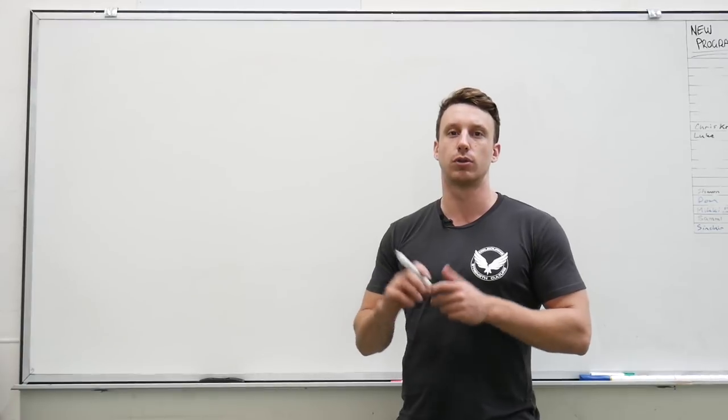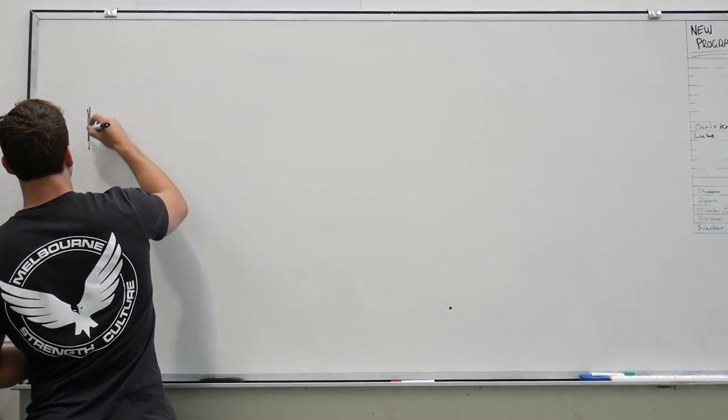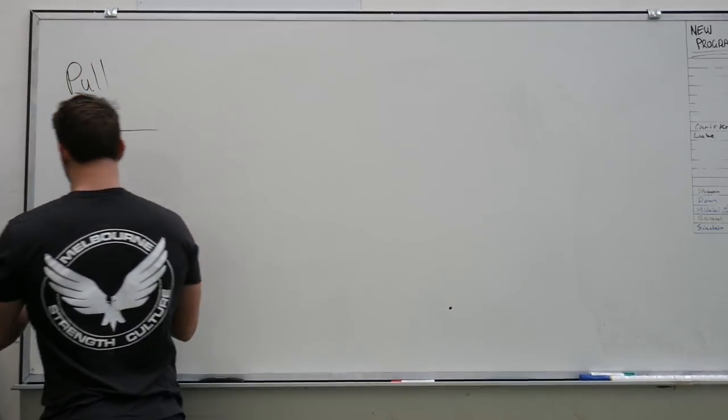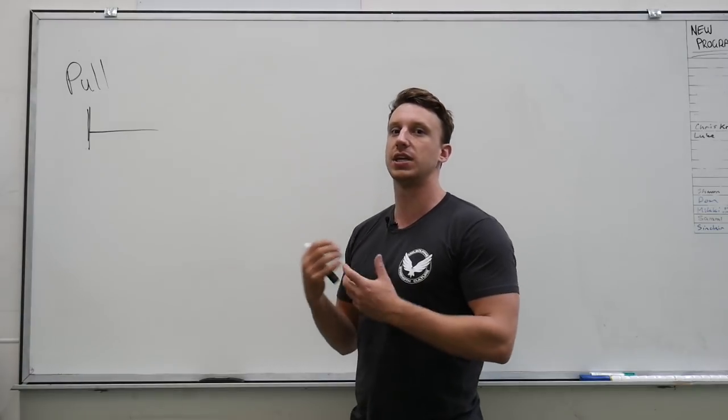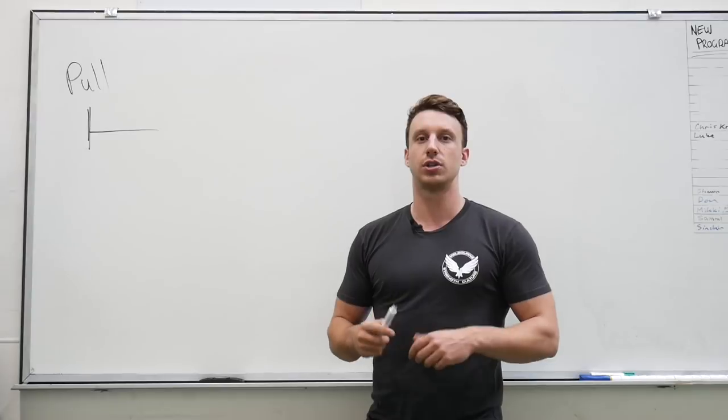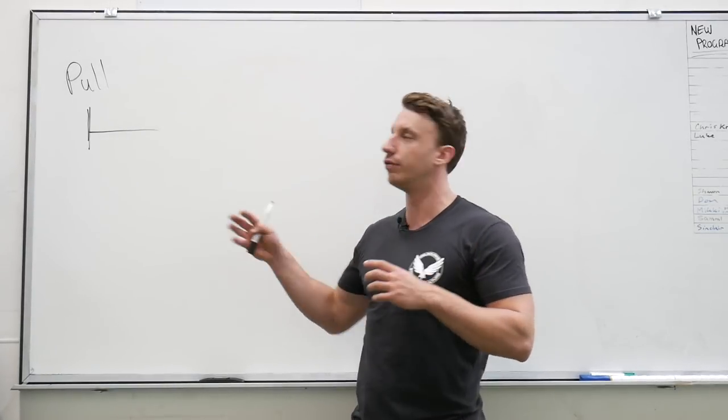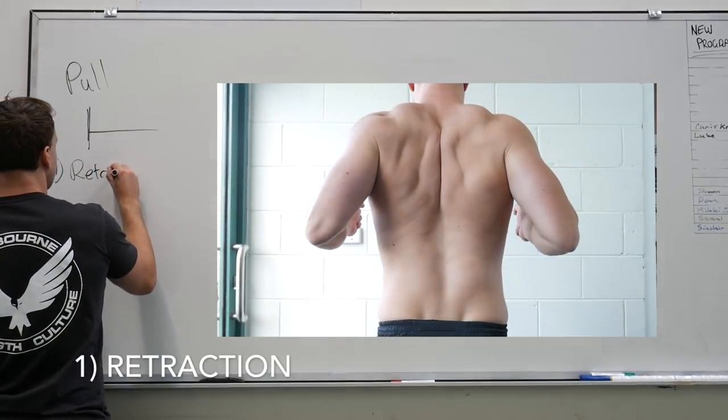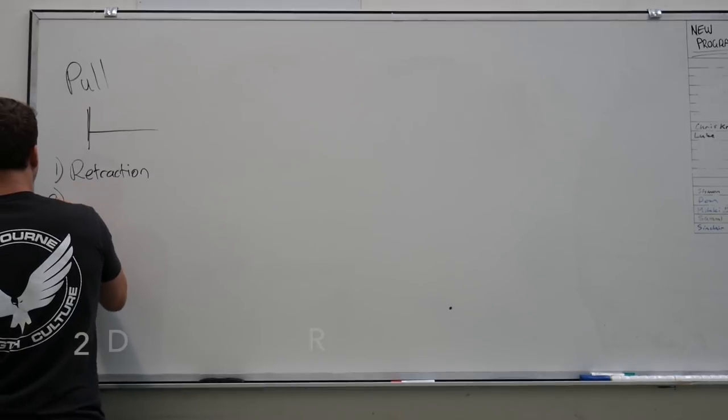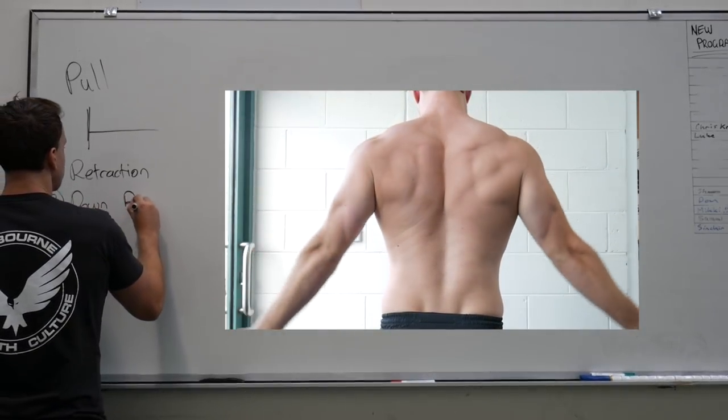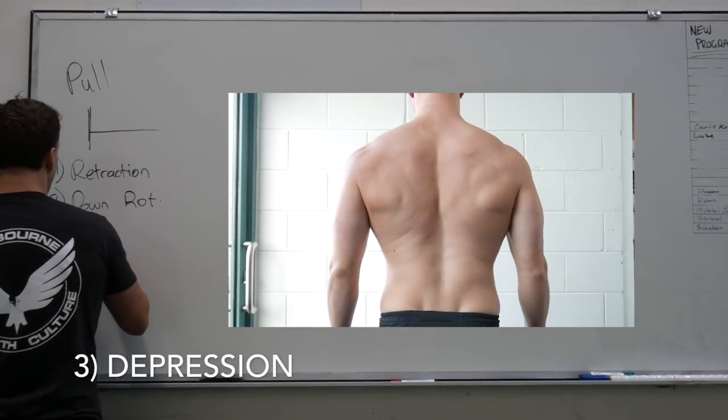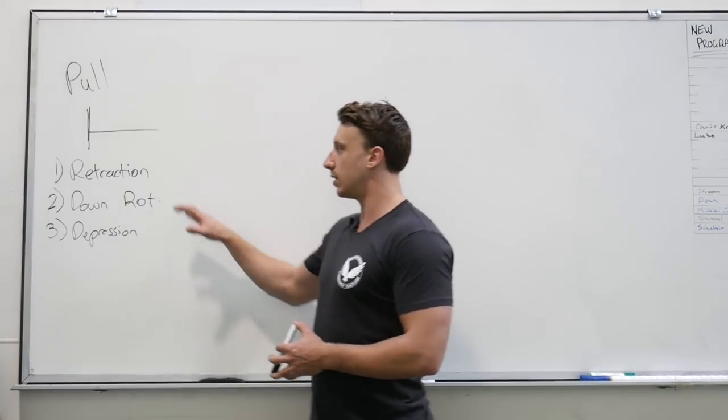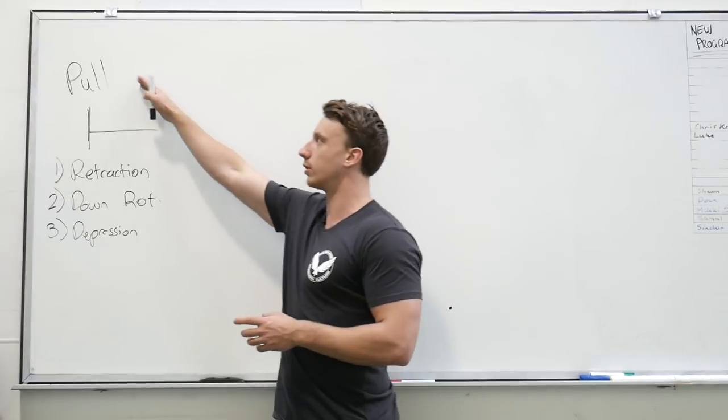So first of all we need to look at a continuum of movement through the upper body. We need to start with what actually happens with our pulling movements, particularly what is happening at the shoulder blades. The osteokinematics of the shoulder blade through pulling motions: number one they go through retraction, number two they go through downward rotation, and number three they go through depression, particularly if you've been cued to pull your shoulders down and back. So these are the three main things that occur at the shoulder blades whilst going through our pulling movements.